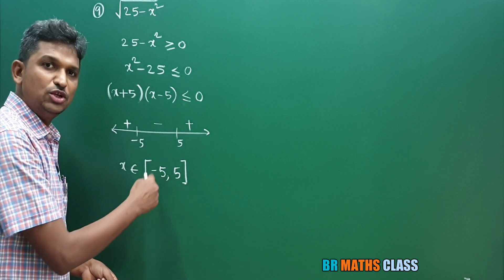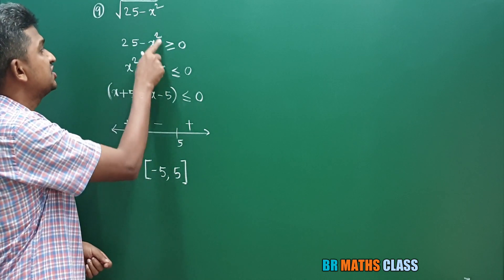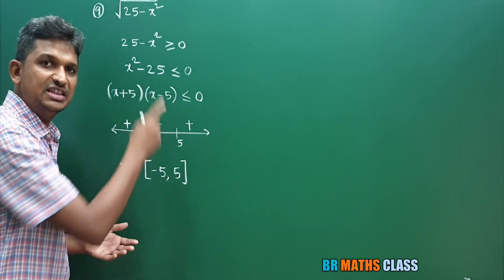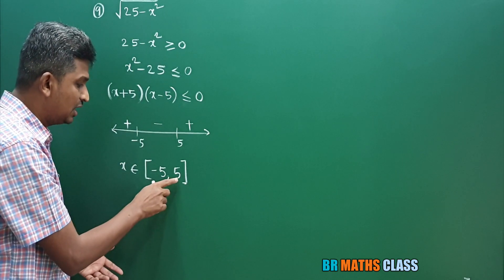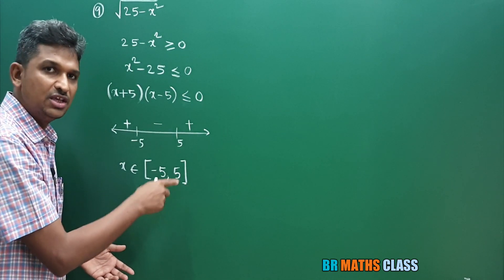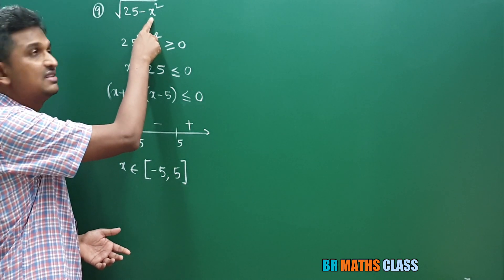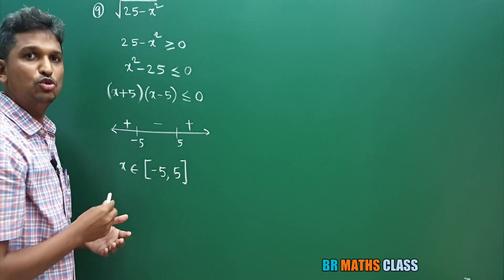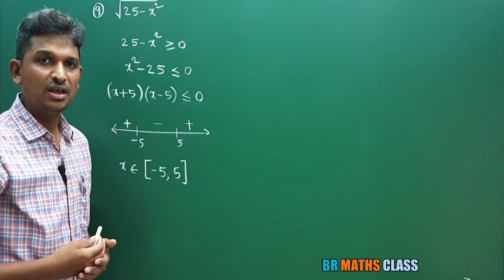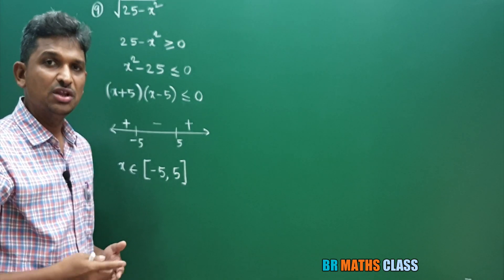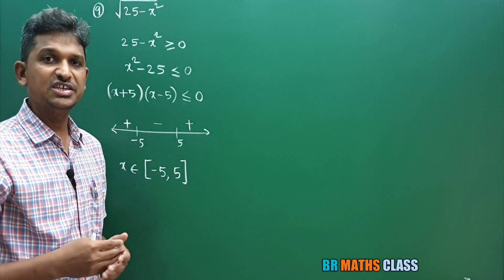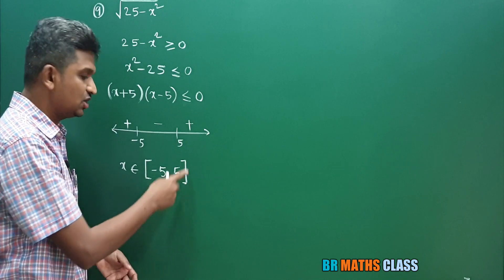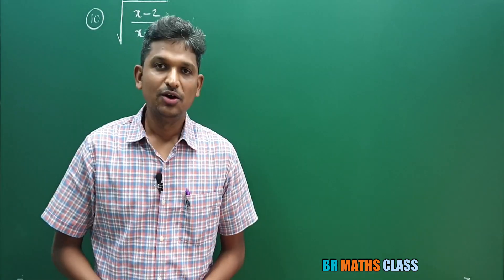Take any x value in the interval minus 5 to 5 — this expression is positive, meaning the function is defined. If you take any number outside this interval, the function is not defined. For example, take x equal to 6: 6 squared is 36, and 25 minus 36 gives a negative number under the square root — the function is not defined. So the domain is closed interval minus 5 comma 5.